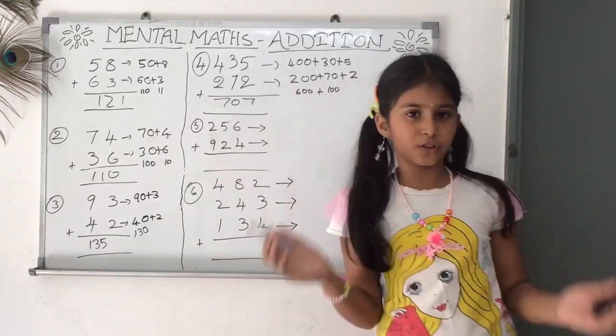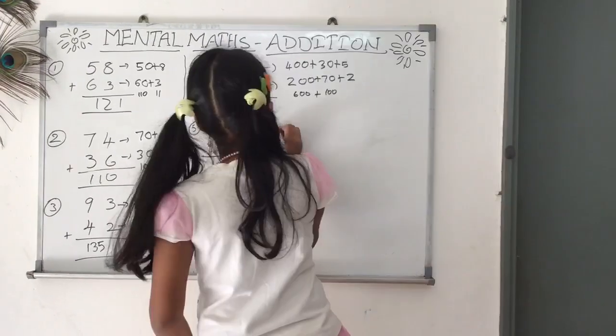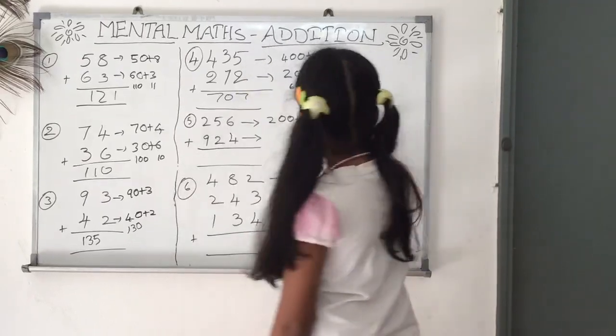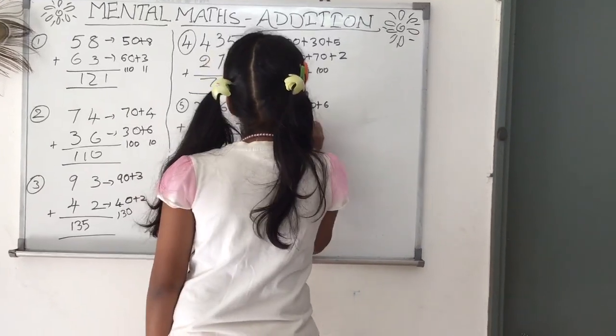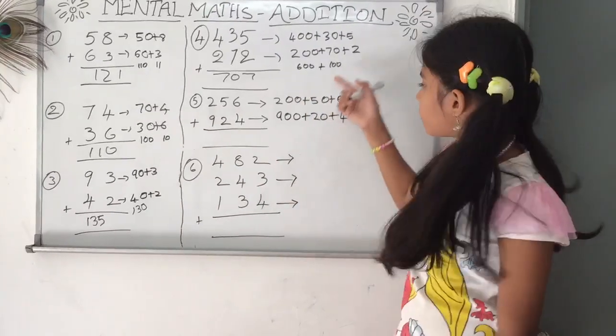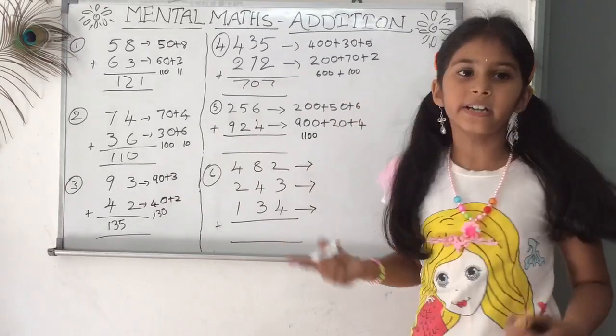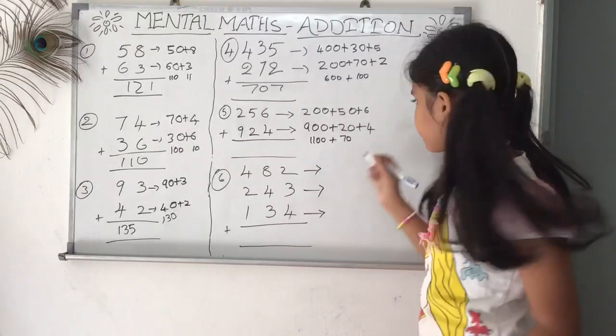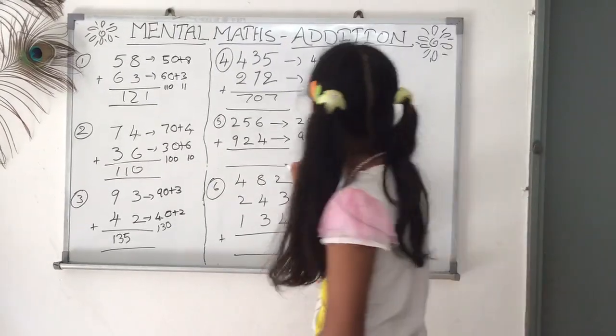Now let's go to the fifth question. This also is three digits. 256 is nothing but 200 plus 50 plus 6. Similarly, 924 is nothing but 900 plus 20 plus 4. Now we need to add 200 plus 900, we get 1100. Now 50 plus 20, we get 70. So if we add these both, we get 1170. Now 6 plus 4 is 10. So 1170 plus 10, we get 1180.